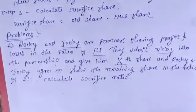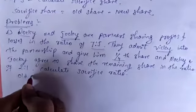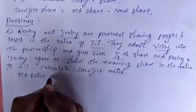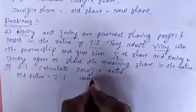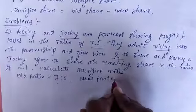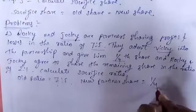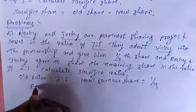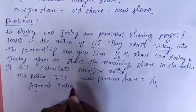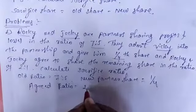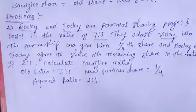The information given is: old ratio equals 7:5, new partner share is 1/4th, and the agreed ratio is 2:1. This much information is given to calculate the sacrifice ratio.